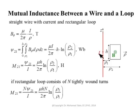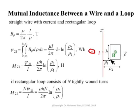We want to calculate the inductance M21 — the flux linking the loop due to the conductor. Assuming a current I in the wire, we know the magnetic field will be in the φ direction. We have an expression for that: H = I/(2πρ) in the φ direction. Then B at any point in space equals μI/(2πρ) in the φ direction, in Tesla.